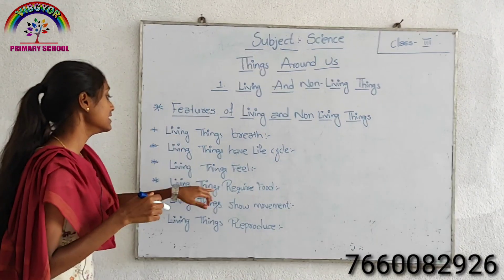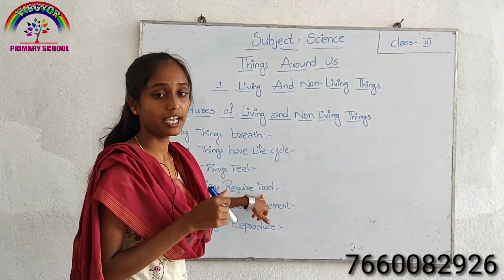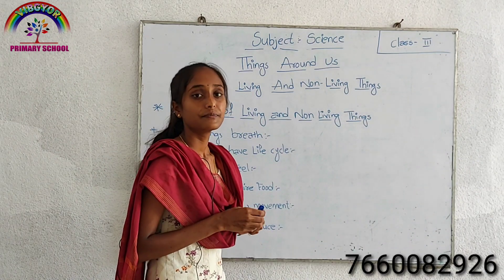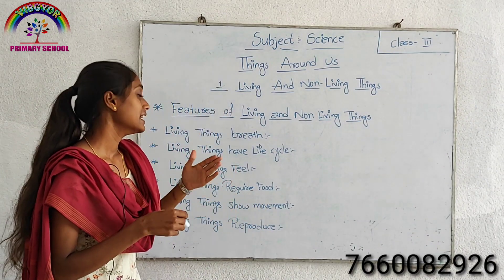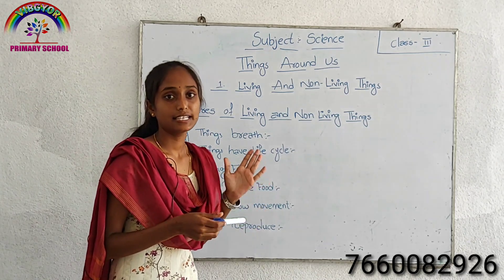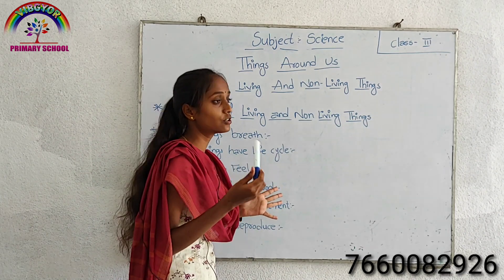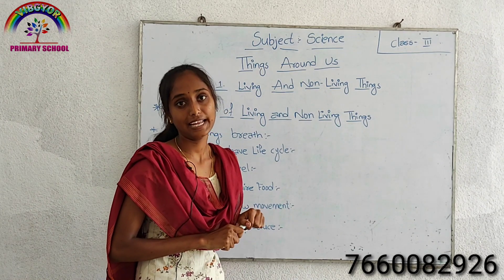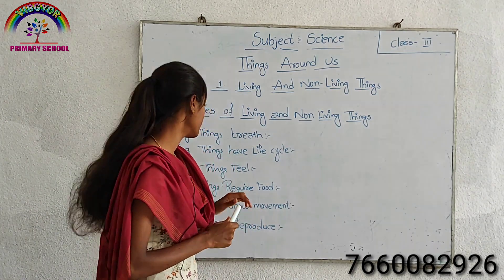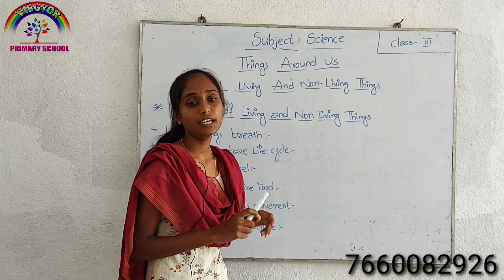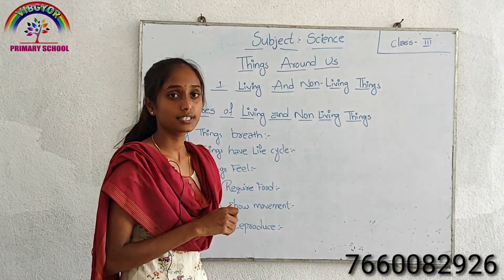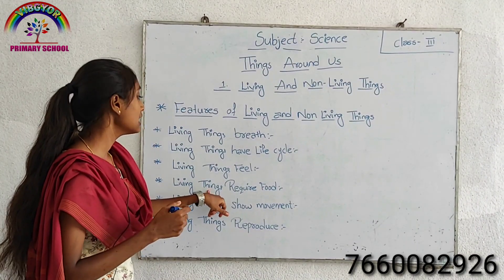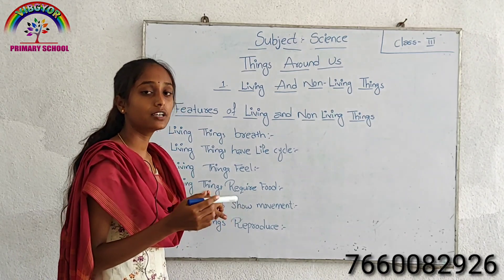Living things require food. Food is essential for all living things to survive and grow. Animals and humans depend on plants and other animals for their food. Plants prepare their own food by the process of photosynthesis, using sunlight, water, and carbon dioxide. Non-living things do not require food because they cannot grow.